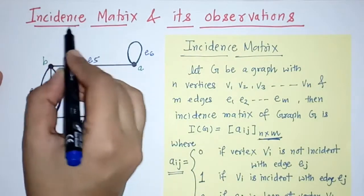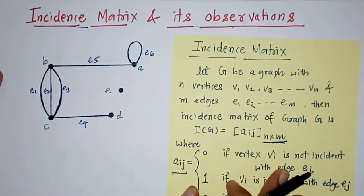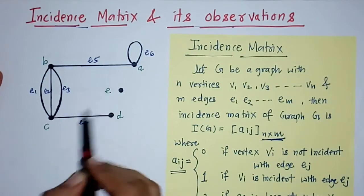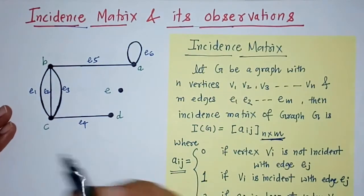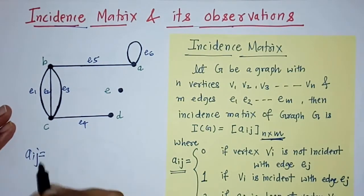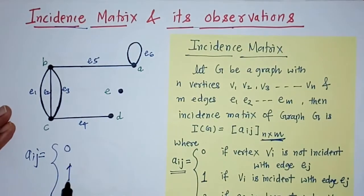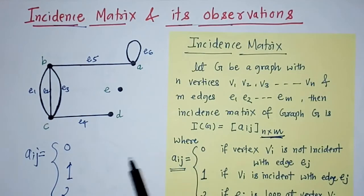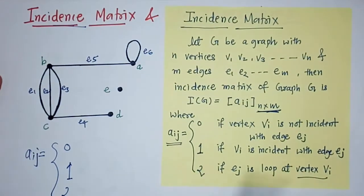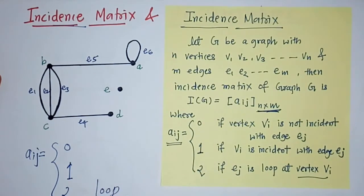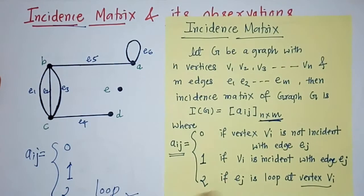Hello everyone, today we are going to see the incidence matrix and its observations for any graph. We know how to find the incidence matrix — it is a relation between vertices and edges. Its elements are a_ij, where a_ij is 0 when the vertex is not incident with any edge, 1 when the vertex is incident with an edge, and 2 when there is a loop at that vertex.